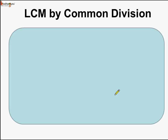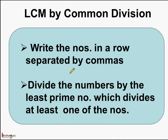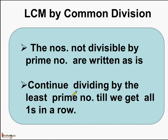Let us review how we found the LCM using the common division method. First, we write the numbers in a row separated by commas. Next, we divide the numbers by the least prime number which divides at least one of the numbers. The numbers not divisible are written as is, and for the other numbers we write down the quotients. We continue to divide by the least prime numbers till we get all the quotients as one — meaning all ones in a row.